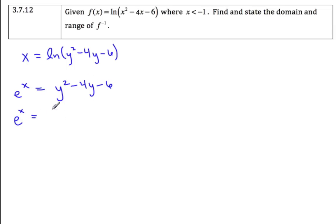So e to the x, y squared minus 4y, and then subtract 6. To complete the square I take half of negative 4, which is negative 2, and I square it, so that's plus 4.